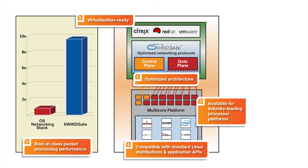6Wingate is widely used in virtual networking appliances, as well as physical appliances. It supports virtualization environments from Citrix, Red Hat, and VMware. Thanks to special drivers that have been developed by 6Wingate, 6Wingate can deliver about the same high level of performance in a virtual appliance as it can in a physical appliance, which greatly facilitates the introduction of virtual appliances by companies that already have physical networking solutions.